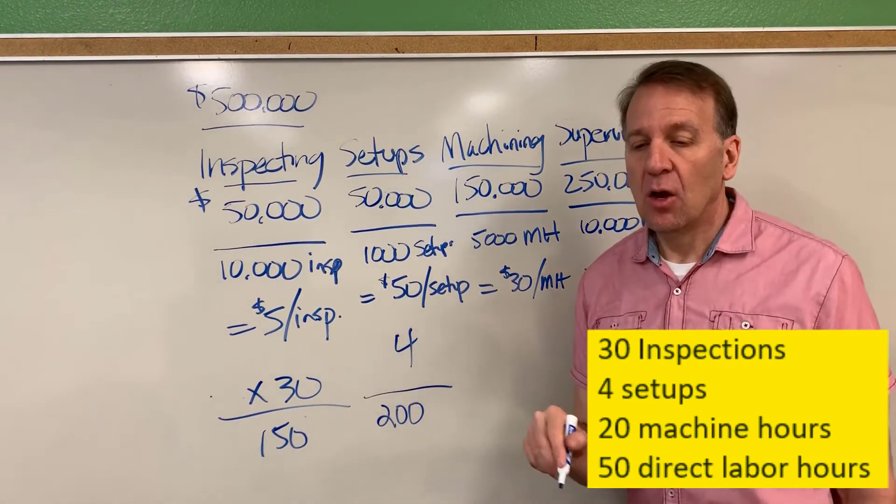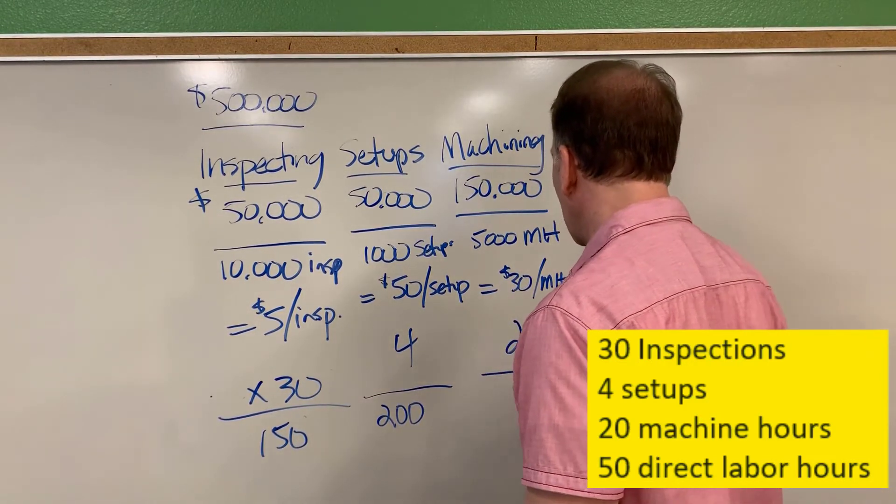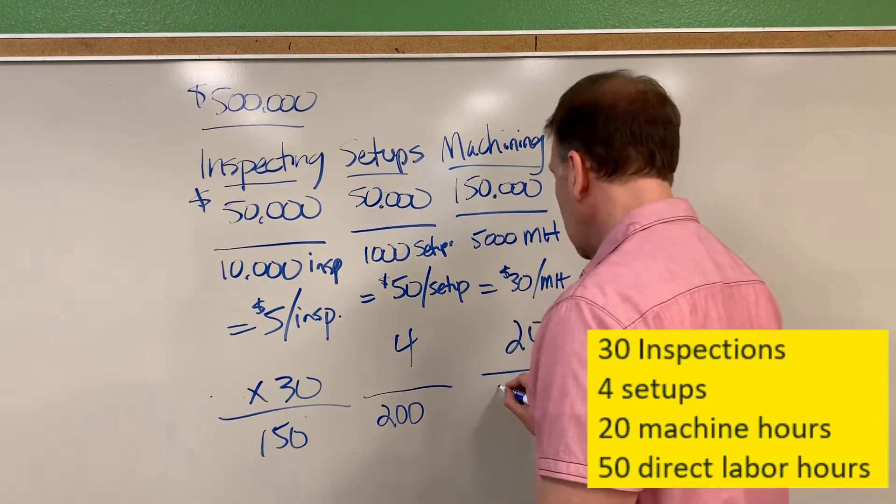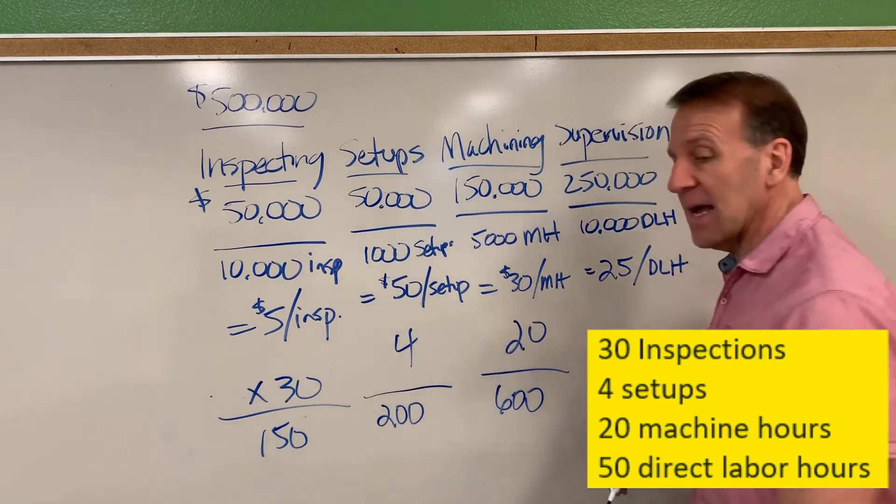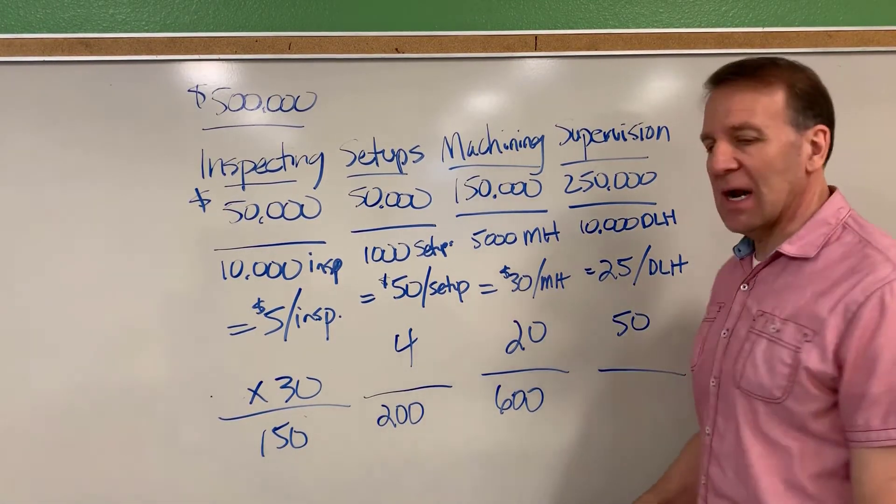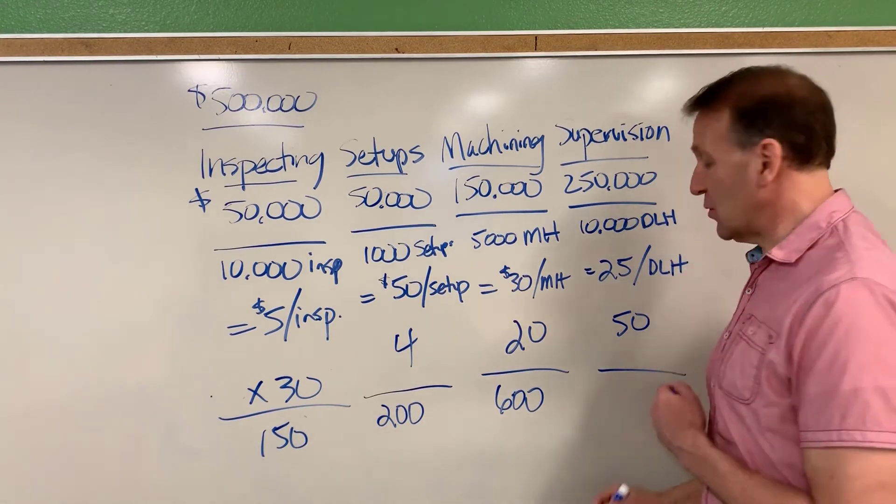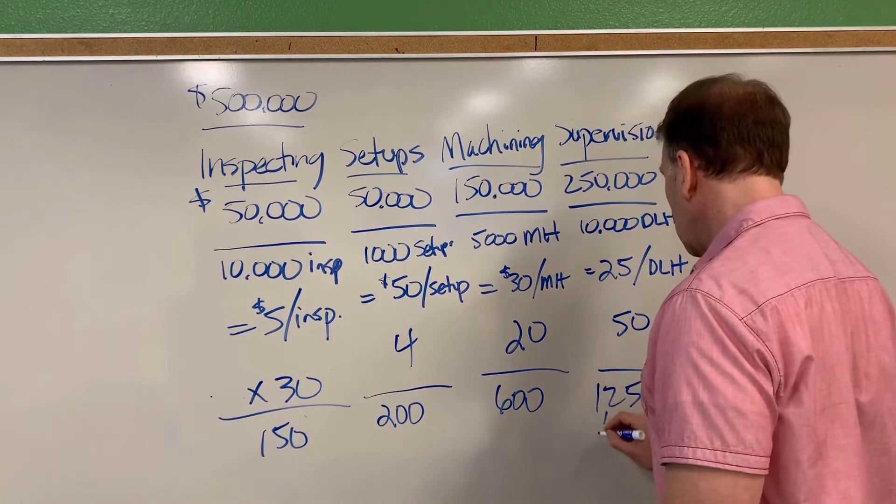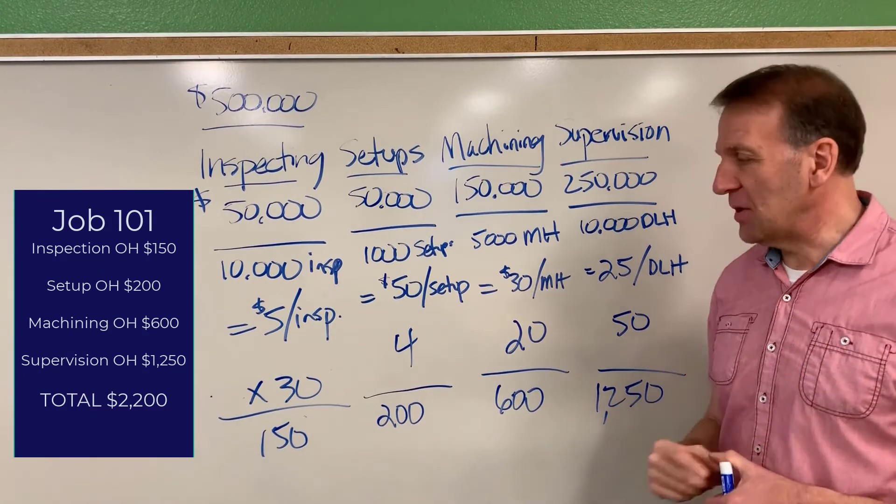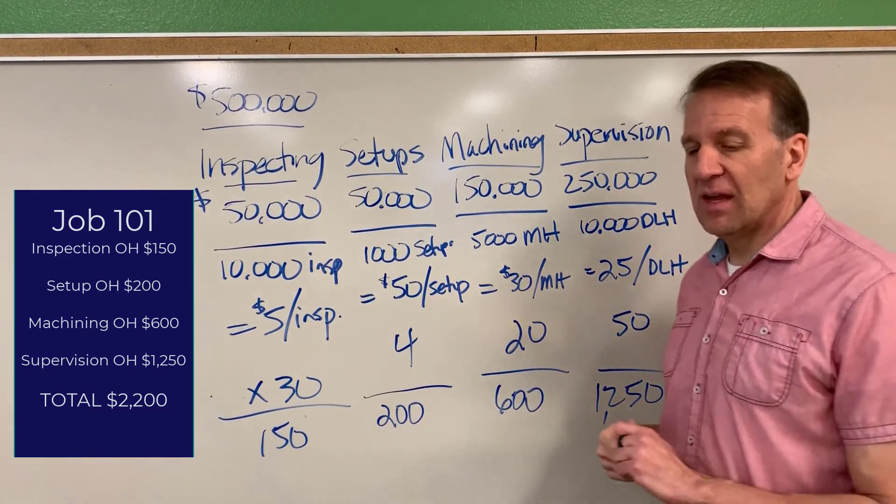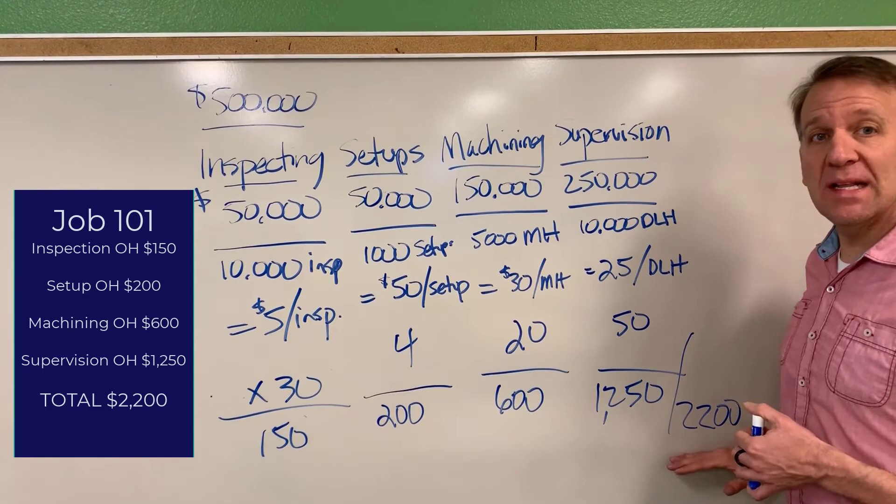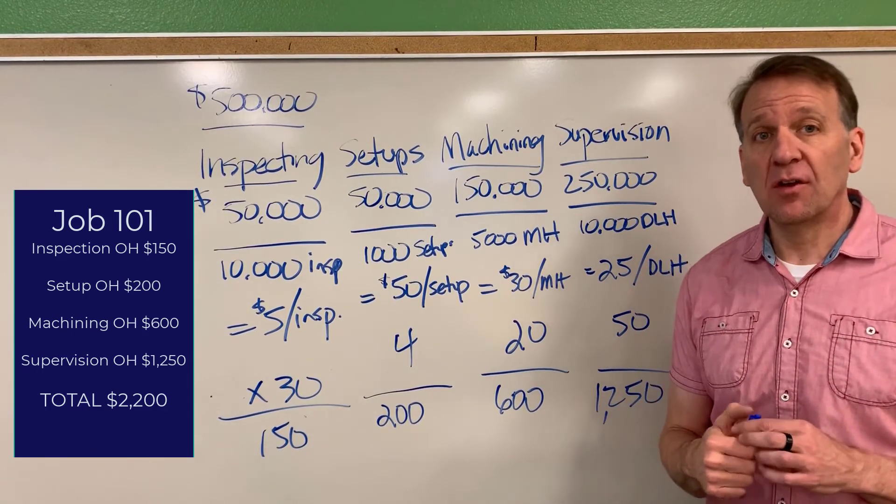In the machining area, we had 20 machine hours that we used in order to manufacture our product. So 30 times 20 machine hours gets us $600. And then lastly, for this job 101, 50 direct labor hours. So 50 direct labor hours times 25 per direct labor hour gets us $1,250 worth of overhead associated with this activity. So now we can add up these four numbers, and that gets us a total of $2,200. And this is what needs to go into our work in process for this job 101.